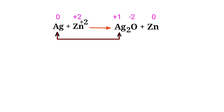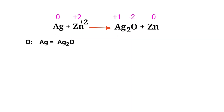In this equation, silver has a charge of zero and is changing into plus one, so silver is being oxidized. Zinc has a charge of plus two and is changing into zero, so zinc is being reduced.